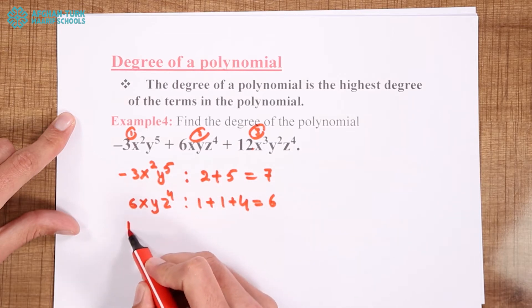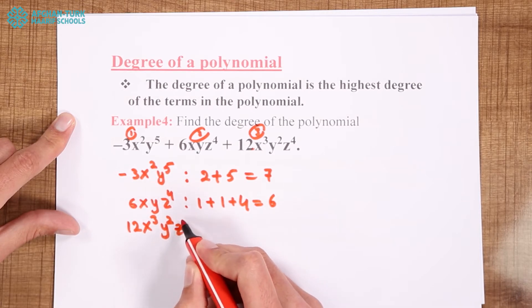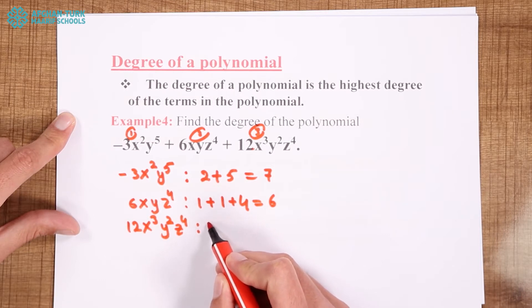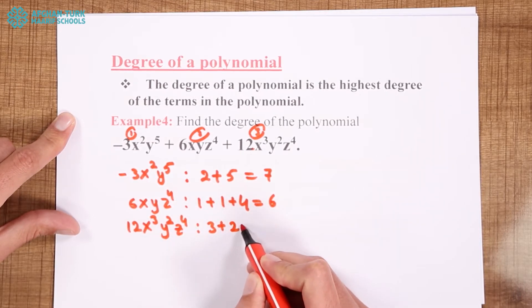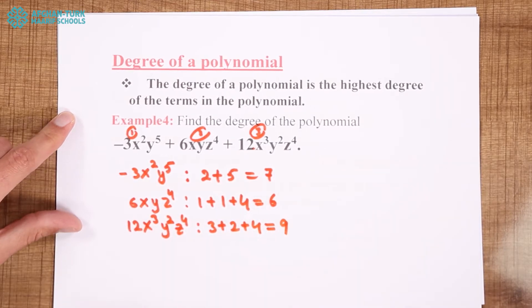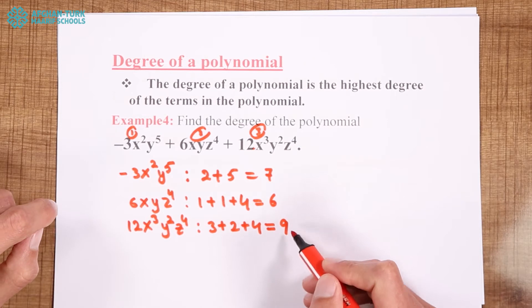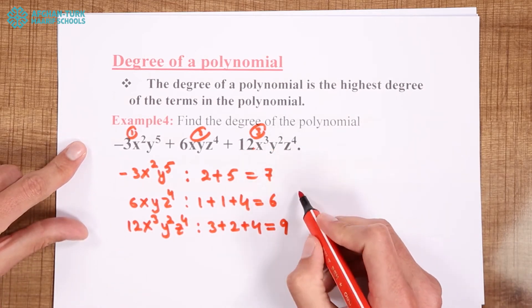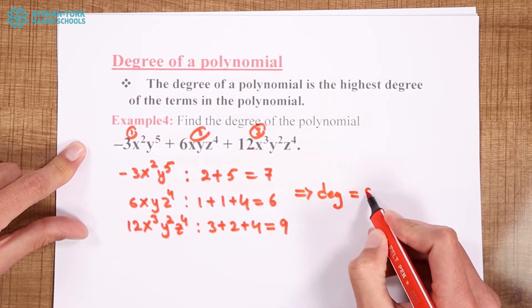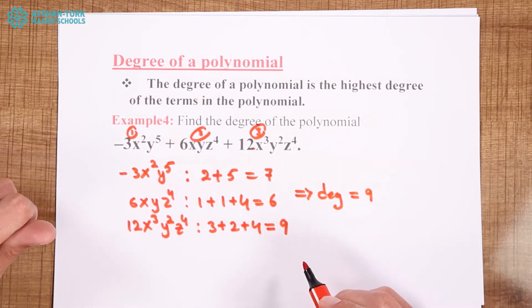For the third term we have 12, x to the power of 3, y to the power of 2, z to the power of 4. If we add the powers: 3 plus 2 plus 4 — that is 5, and 5 plus 4 is 9. The highest degree here is 9, which belongs to the third term. So the degree of the polynomial is equal to 9. For more examples, you can see your book.